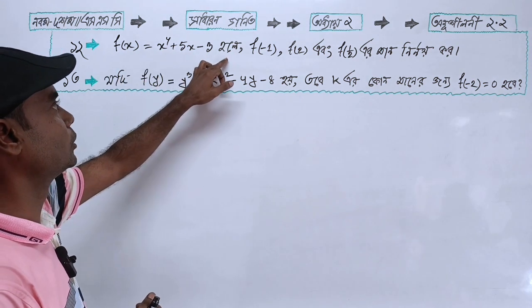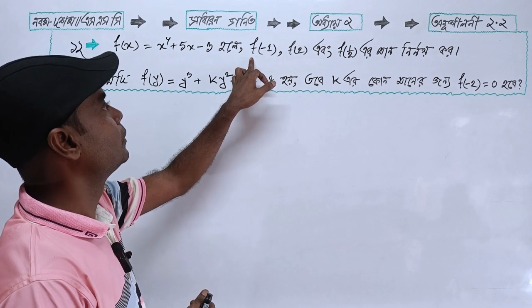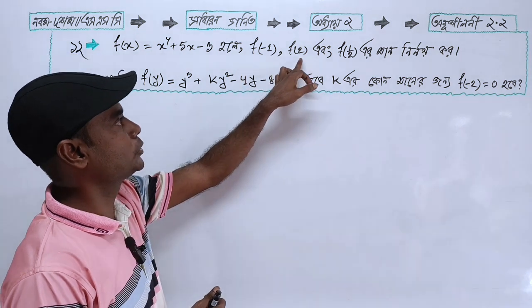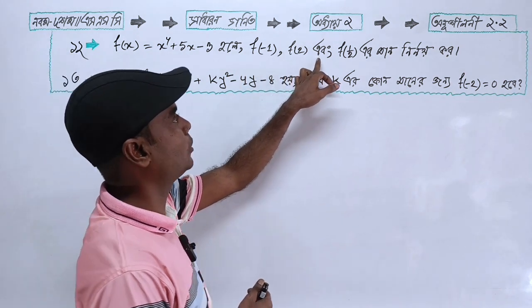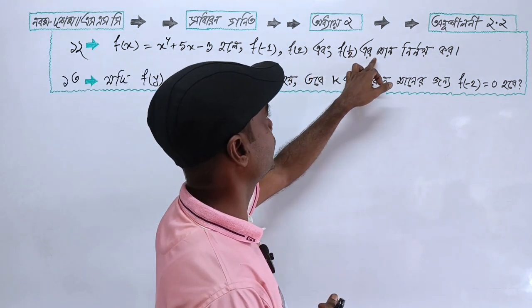We will evaluate the function at x equals minus 1, function at 2, and function at 1 divided by 2.